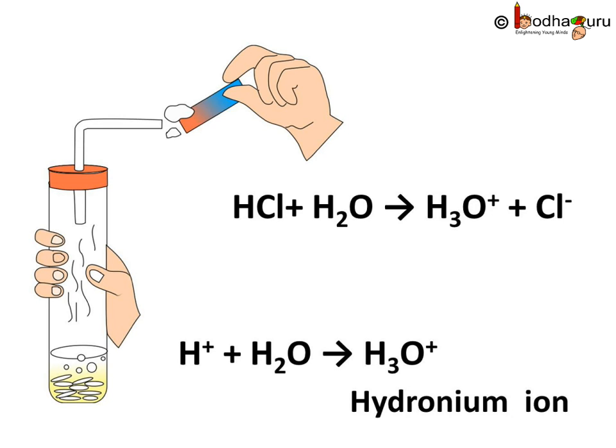Hydrogen ions cannot exist alone. Actually, in aqueous solution, hydrogen ions exist after combining with water molecules — meaning they form hydronium ions. This is represented by the chemical equation: H⁺ + H₂O gives H₃O⁺.